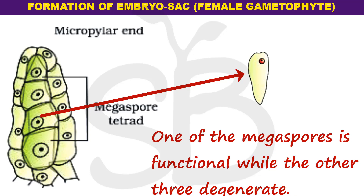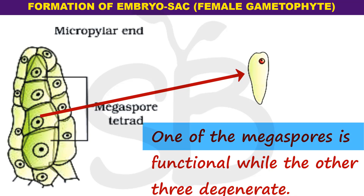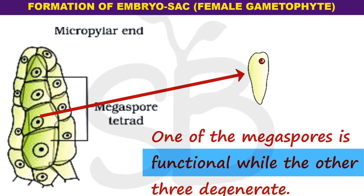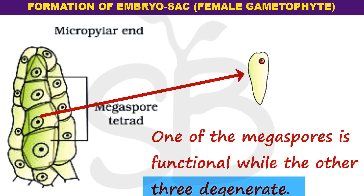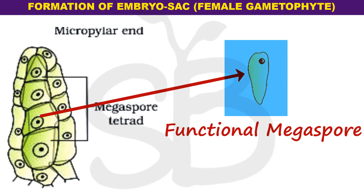In a majority of flowering plants, one of the megaspores is functional while the other three degenerate. The one functional megaspore develops into the female gametophyte, which is the embryo sac.